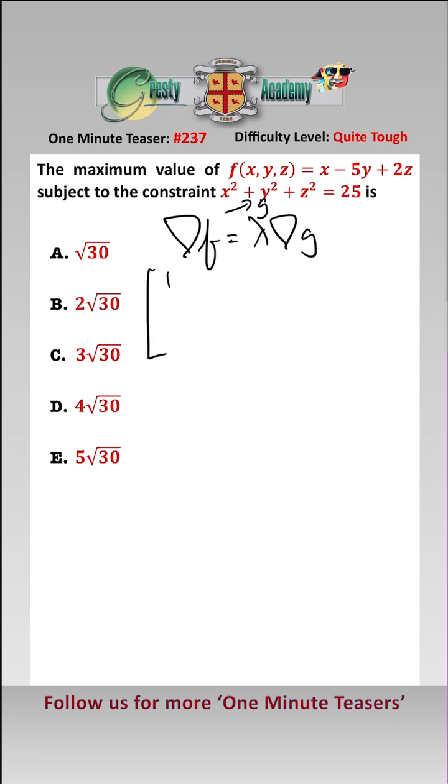Doing the partial differentiation, we get 1, minus 5, 2 equals lambda times 2x, 2y, 2z, and that gives us